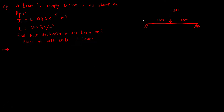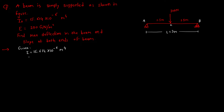We'll denote the points as A, B, and the center point as C. The total length of the beam is 1.5 + 1.5 = 3 m. Given: I = 15.614 × 10⁻⁶ m⁴, and E = 200 GN/m².